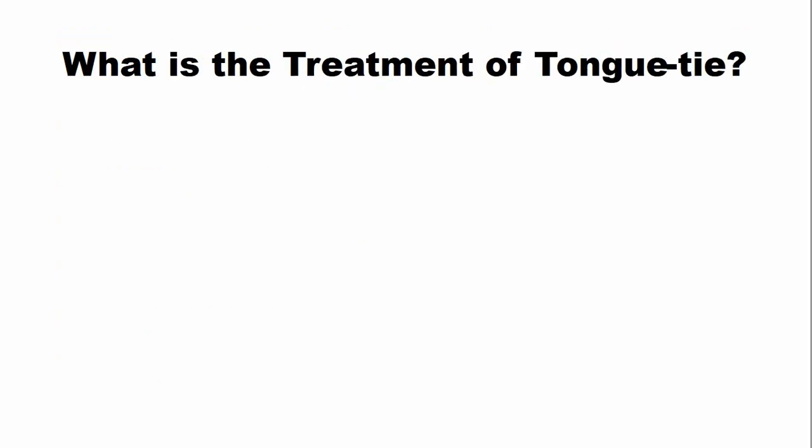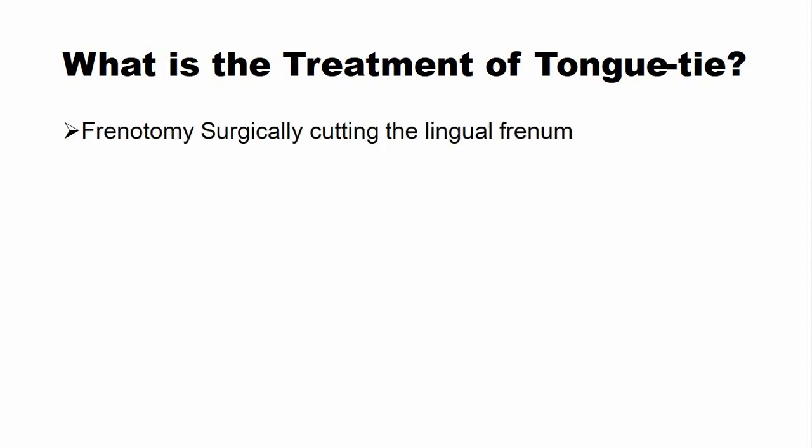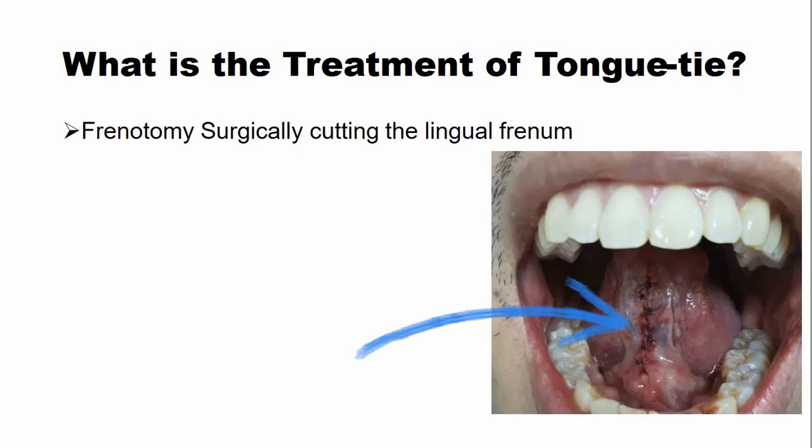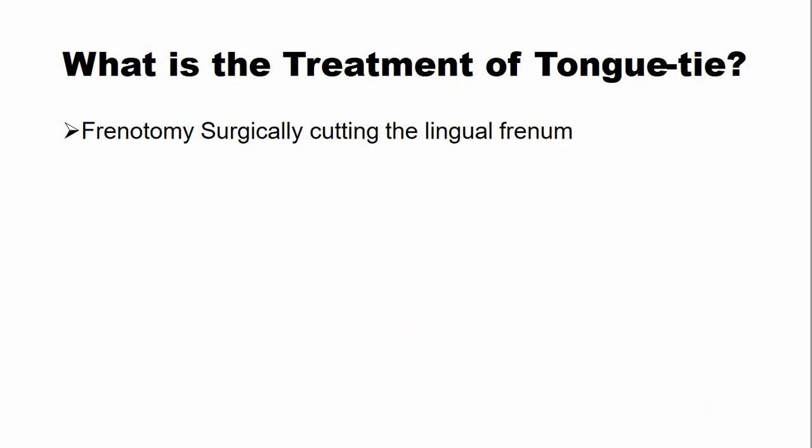So what is the treatment of tongue tie? The treatment is usually frenectomy, which is the cutting of the lingual frenulum. It is usually surgically removed, but sometimes newer methods such as lasers are also used for the removal of the additional tissue. Sometimes, in addition to the surgical treatment, the patient may also need speech therapy for the correction of speech.